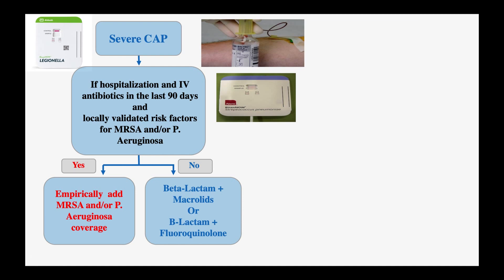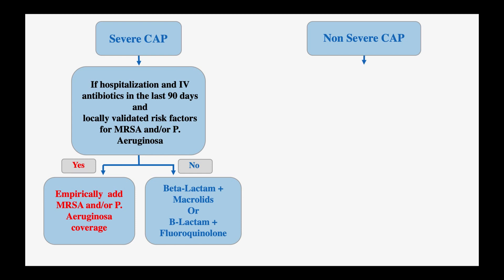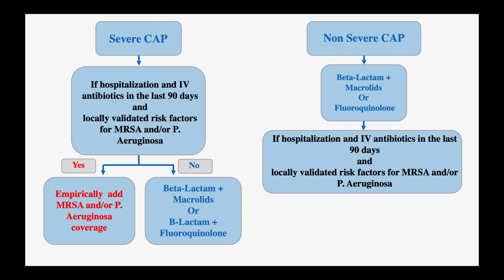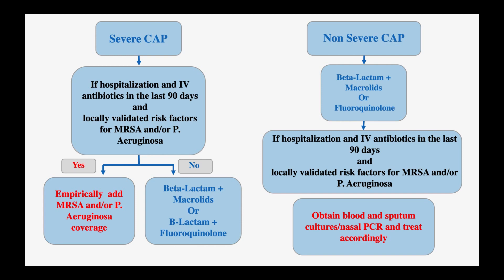Since our patient has non-severe community-acquired pneumonia, do we need to obtain cultures or urine legionella and strep pneumonia antigen? The answer is no. We can treat our patient empirically with beta-lactam plus macrolides or fluoroquinolones alone. The only condition requiring cultures in non-severe CAP is if the patient was previously hospitalized and received IV antibiotics within the last 90 days, with locally validated risk factors for MRSA and/or pseudomonas — in which case we obtain blood cultures, sputum culture, and nasal PCR, continue antibiotics, then escalate or de-escalate accordingly.